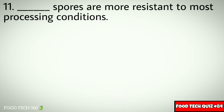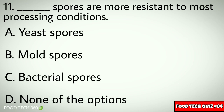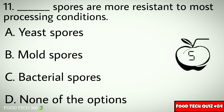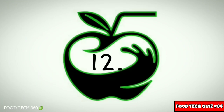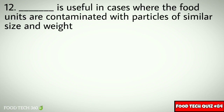Question number 11: Dash spores are more resistant to most processing conditions. Options: A. Yeast spores, B. Mold spores, C. Bacterial spores, D. None of the options. Correct answer: C. Bacterial spores.